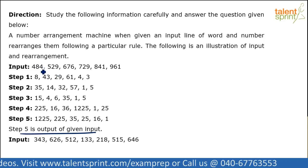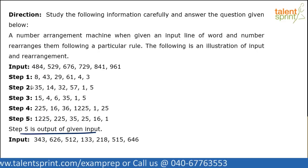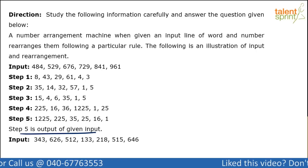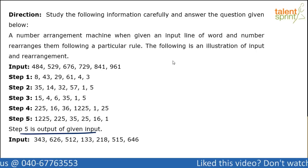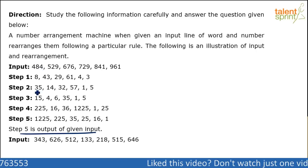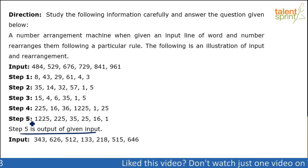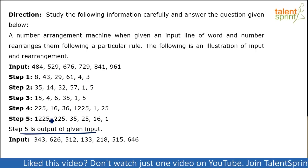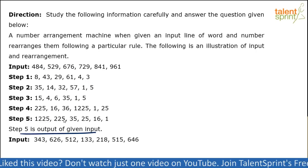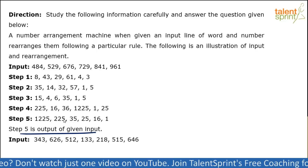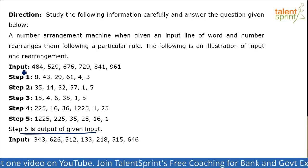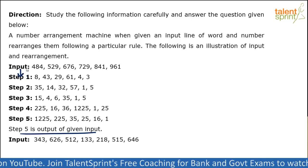So what we'll do is look at the complete step-by-step process and see if we can crack the logic. One observation is that the number of numbers is fixed in each step. From input till the last step, step 5, there are six numbers in each step. Let's see what the logic is from input to step 1 — try to identify the logic.